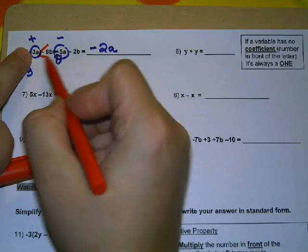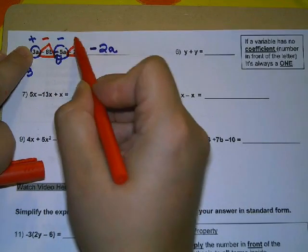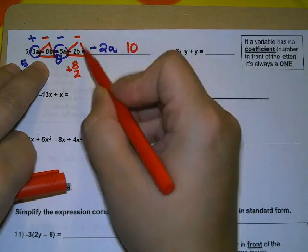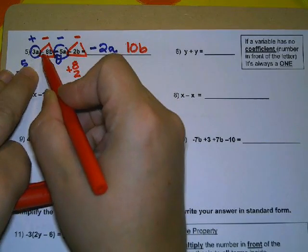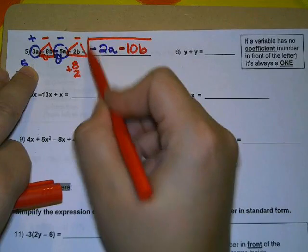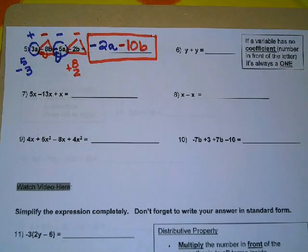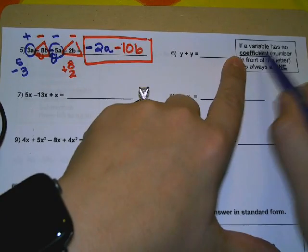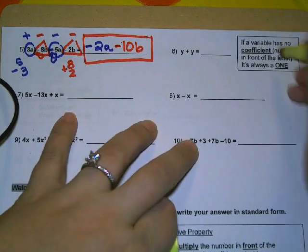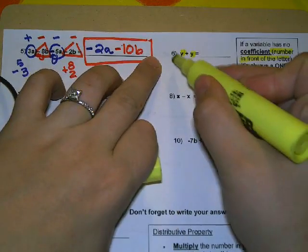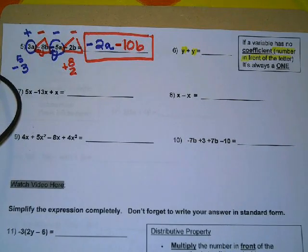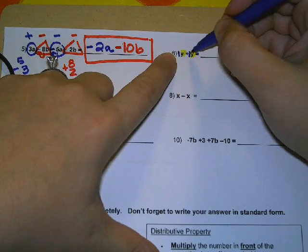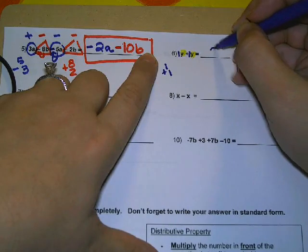Then we combine negative 8B with negative 2B. Both are negative — the same sign — so we add: 8 plus 2 is 10. Since 8 is larger and its sign is negative, we write minus 10B. The remaining terms can't be combined because the variables don't match. In example 6, we have Y plus Y. When a variable has no coefficient, there's an implied 1 in front. So it's 1Y plus 1Y — same sign — giving us 2Y.